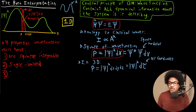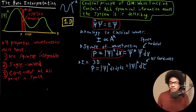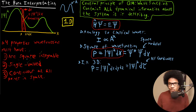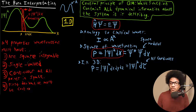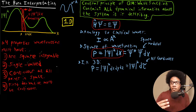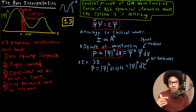The third property is that the wave function must be continuous at all points in space. At any point where the potential is continuous, this function must also be a continuous function — no jump discontinuities. And the fourth property is that the first derivative must also be continuous at any point where the potential is continuous. So to recap: square integrable, single valued, continuous at all points in space, and the first derivative must also be continuous. If a wave function meets these four properties, it's an acceptable wave function within the Born interpretation.